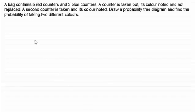In order to illustrate this, we've got this example where we've got a bag that contains five red counters and two blue counters. A counter is taken out and its colour noted, but this time, unlike previous examples where we replaced the counter, it's not replaced. Then a second counter is taken and its colour noted. We've got to draw a probability tree diagram and find the probability of taking two different colours.